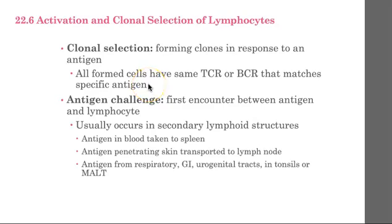We tailor the immune attack to that specific antigen in our adaptive immunity, and that is why it takes a little bit longer to be able to create all these cells that have the same receptors for that antigen.